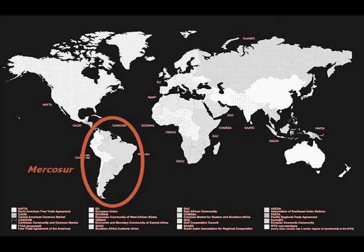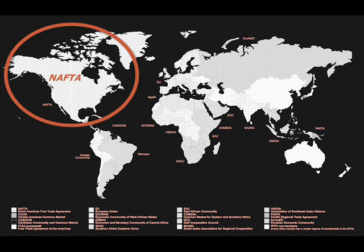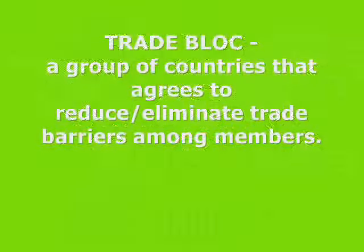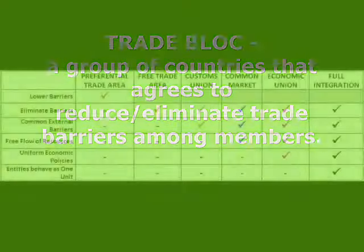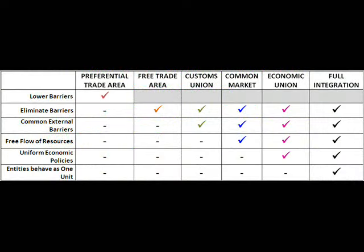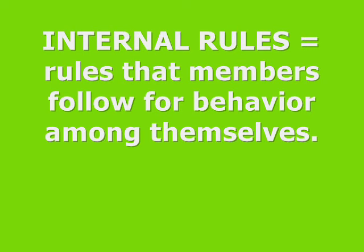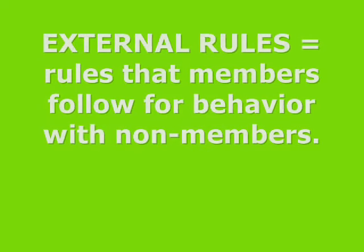But even in smaller groups, there's a spectrum of types of trade blocs. A trade bloc is a group of countries which trade with one another, but they have an agreement among members to reduce trade barriers with one another. The differences among the types of trade blocs come from both internal rules — that is, rules among the member countries — and external rules, which are dealings with non-members.